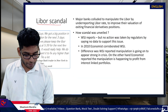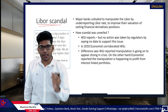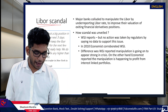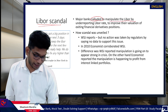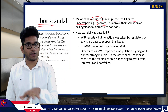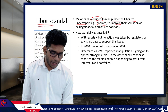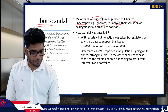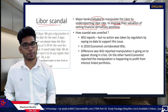What is the LIBOR scandal? Major banks colluded to manipulate LIBOR by under-reporting it. The purpose was to improve their valuation of existing financial derivatives positions — they had positions they wanted to over-report, so they were under-reporting the LIBOR.